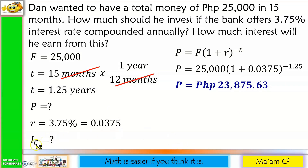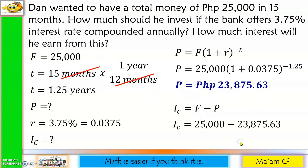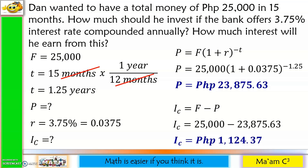For our I sub C, I sub C is equal to F minus P. Our F is 25,000 and our P is 23,875.63. So 25,000 minus 23,875.63 gives us 1,124 pesos and 37 centavos.